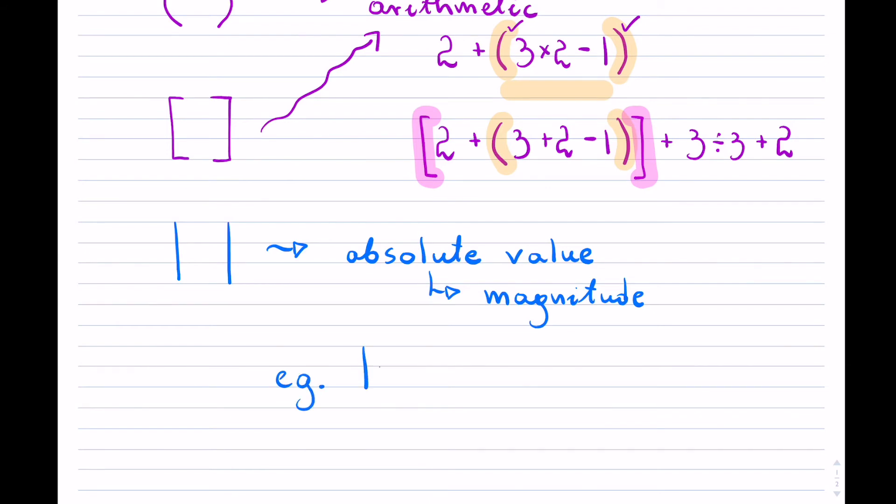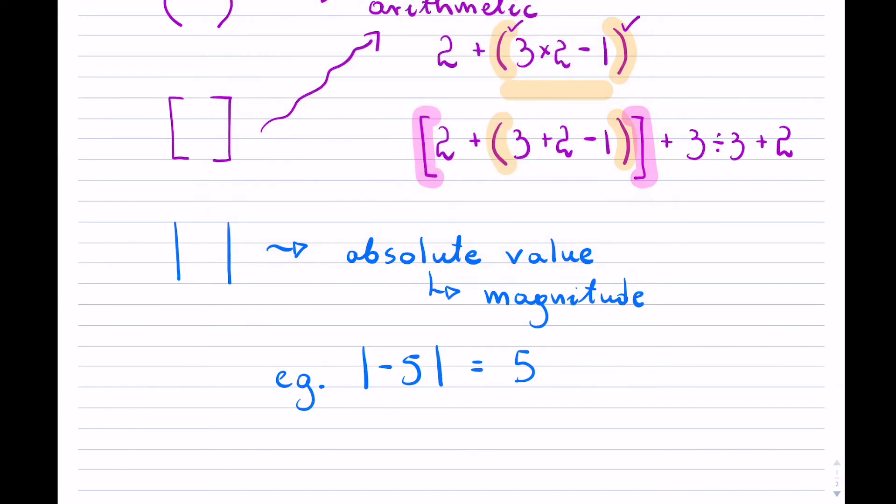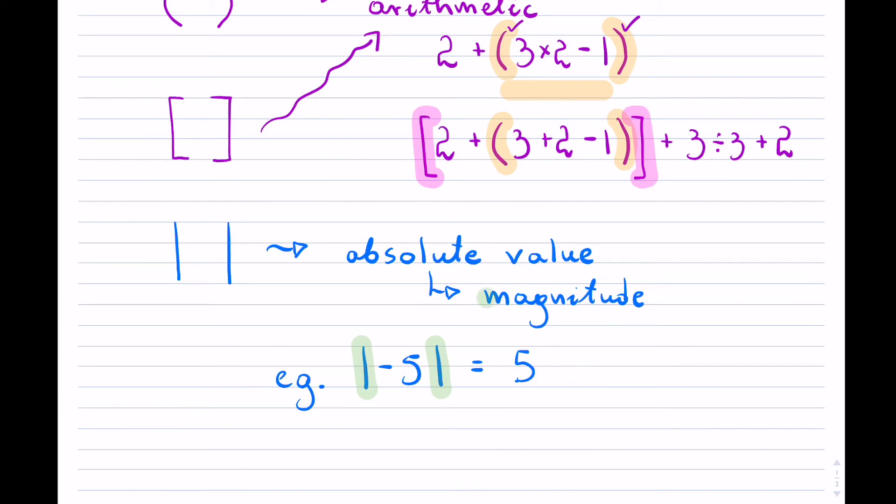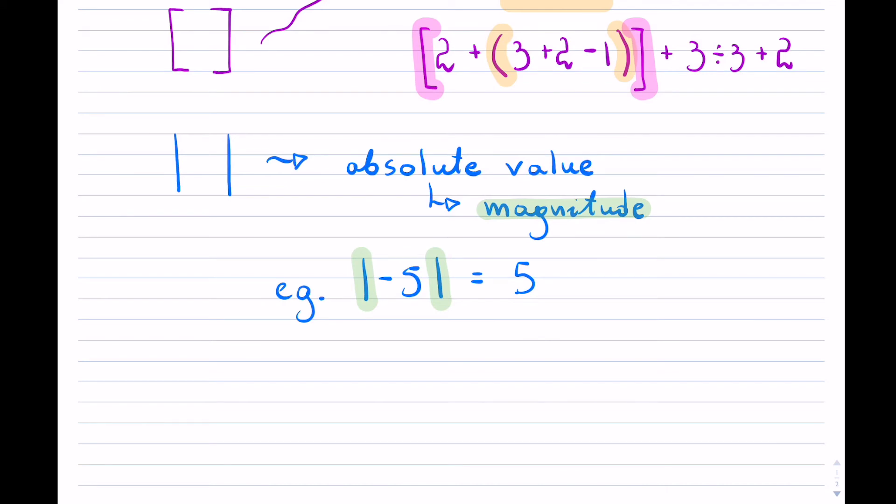When we have the straight lines and we're looking for the absolute value, for instance, the absolute value of negative 5, the answer is actually 5. These brackets are only interested in the magnitude of the number. They don't care if it's positive or negative—just how big it is in terms of magnitude. So say negative 21, the answer would be just 21.